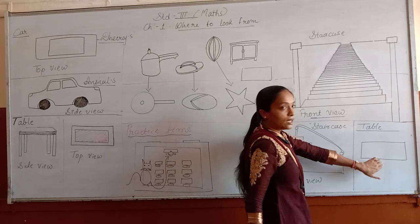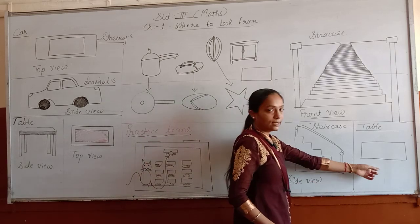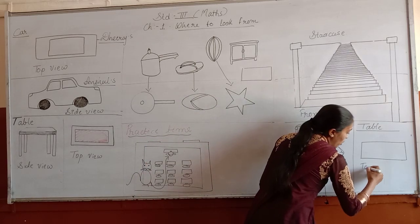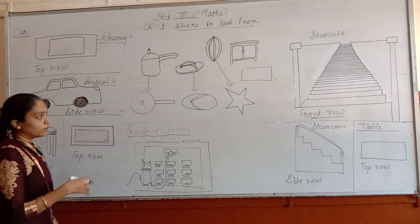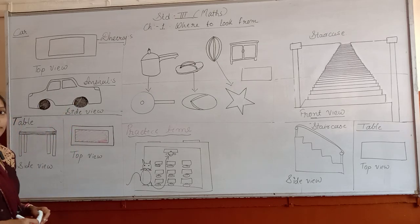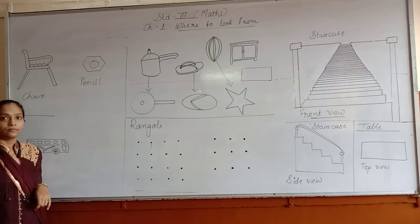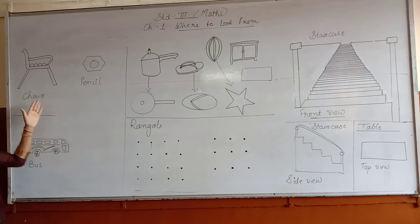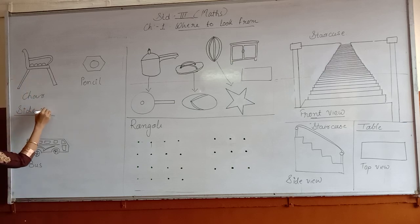Next is a table. Which view is this? This is the top view of a table. So you will write: top view of a table. Now we will see a few more things and write the views. Here you can see a chair — which view is this? You can see this is the side view of a chair. So here is the side view.